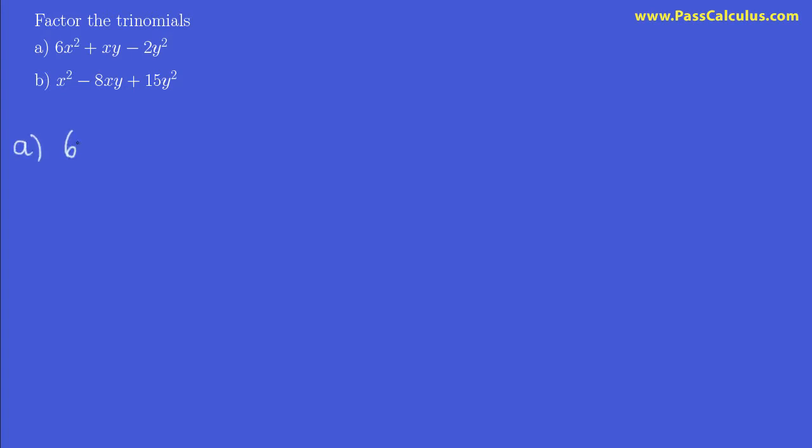So for our first one here, 6x squared plus xy minus 2y squared. Just as before we're going to find our sum and product. The sum is the value of b. In this case there really is a value of b there even though it may not look like there is. The value of b is 1, positive 1.